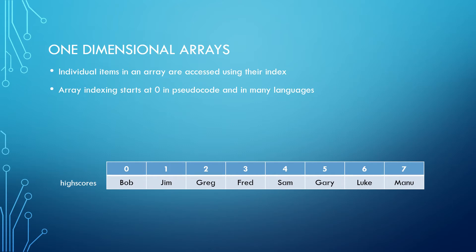If we executed the line output the highest score belongs to high score zero, the actual output would be the highest score belongs to Bob because Bob is the name of the person in high score position zero.